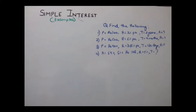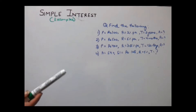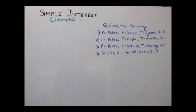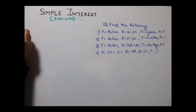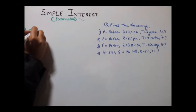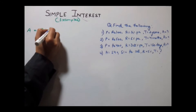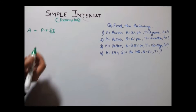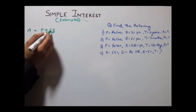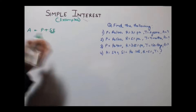Our first example is: find the following, where in the first case P is 100, R is 3% per annum, time is 2 years, and we have to find out the amount. As we know, amount is equal to principal plus simple interest. Our principal is given but simple interest is not given, so we need to find out the value of simple interest.